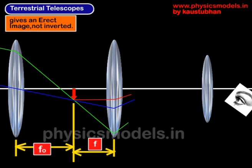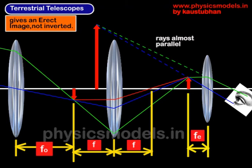Now we have understood the formation of the first intermediate image. We can see how the second intermediate image has been formed. The erector lens has done its job and it has made the inverted image erect. That's the second arrow we are looking at, at a distance F-E from the eyepiece lens. In fact, the eyepiece lens can be adjusted so that it comes to the focal length.